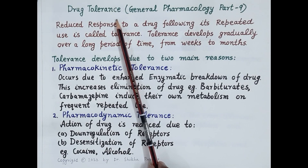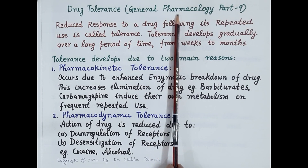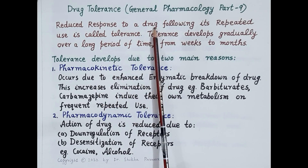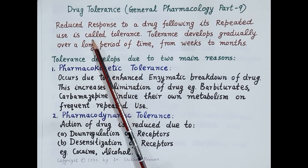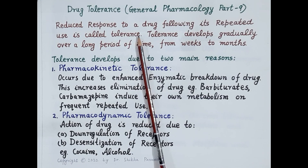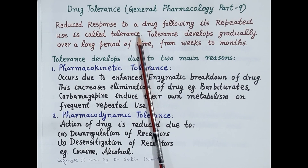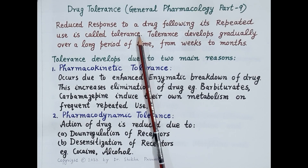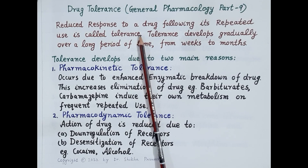Hello students, today we are going to discuss the topic of drug tolerance. This video is ninth in the series of videos on general pharmacology. Drug tolerance is defined as a reduced response to a drug following its repeated use. When we take a drug repeatedly at frequent intervals, after some time the same dose will not produce the same response as earlier — it will produce a lesser effect. A higher dose of the drug is then required to produce the same earlier response. This is called tolerance.